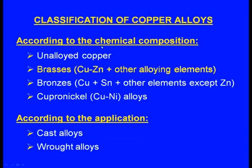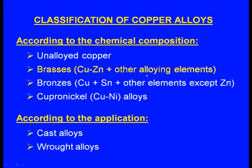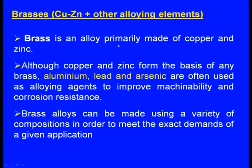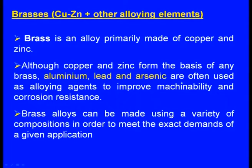Under the chemical composition classification, we have brass. Brass means copper, zinc and other alloying elements, but zinc is the primary alloying element. Brass is an alloy primarily made up of copper and zinc. Although copper and zinc form the basis of any brass, aluminum, lead and arsenic are often used as alloying agents to improve machinability and corrosion resistance. Brass alloys can be made using a variety of compositions to meet the exact demands of a given application.